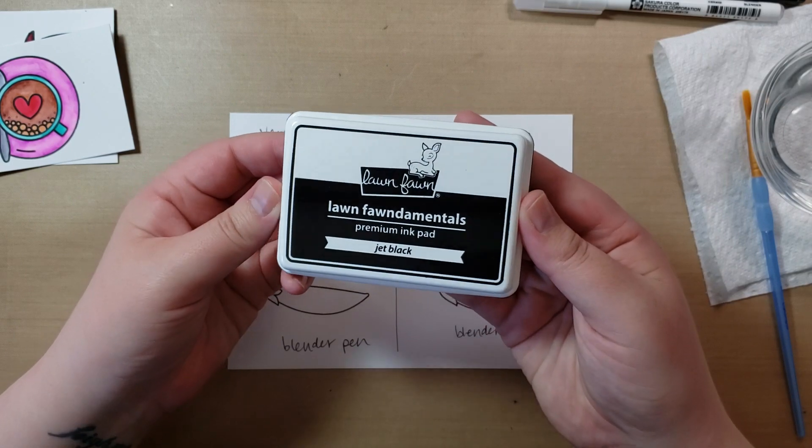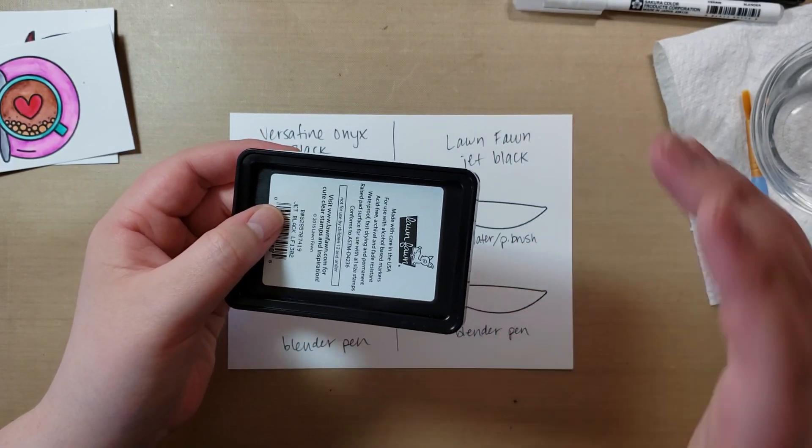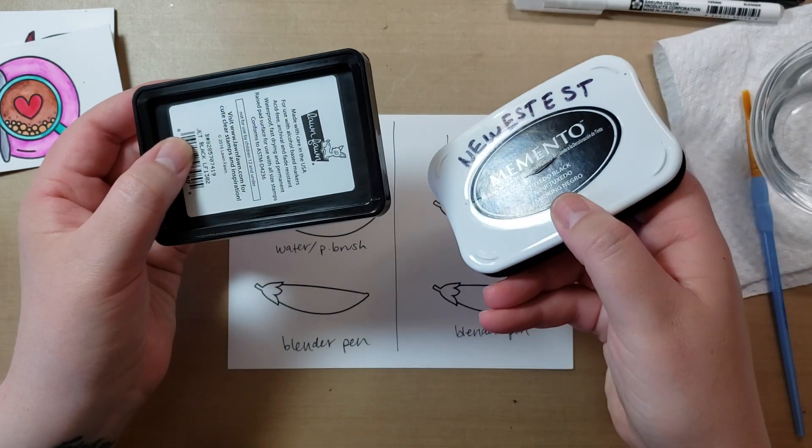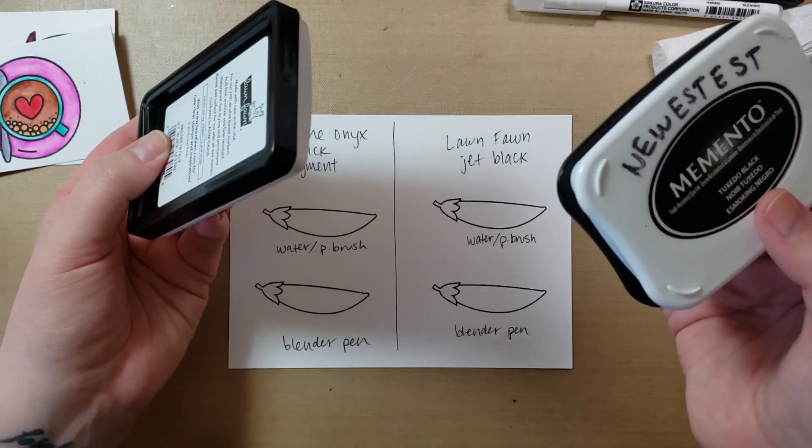So that's this ink, but this can also handle watercoloring, which I've been told Memento can't. I actually haven't tried it. But if you've done watercoloring on Bristol Smooth with Memento, let me know.